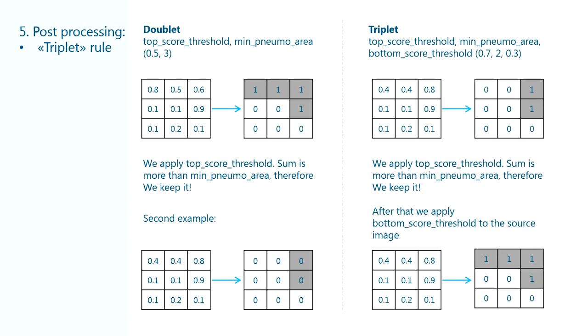Post-processing stage for this competition might have been the crucial one to win. A lot of competitors use tricks I call doublet. Its main idea is to use two thresholds: one for the binarization of probabilities of pixels being pneumothorax, another one sets minimum required pneumothorax area.